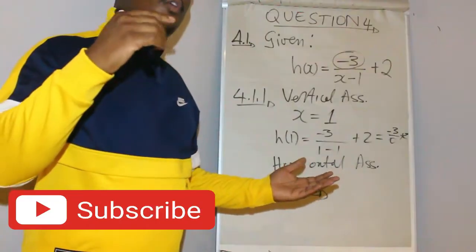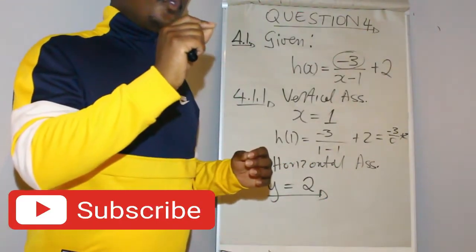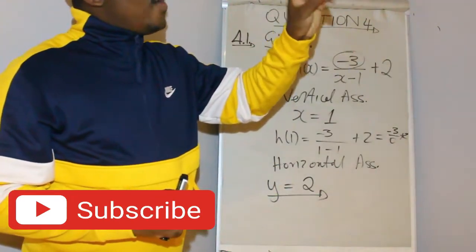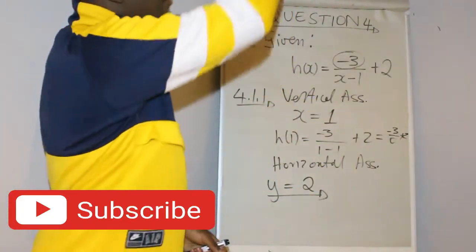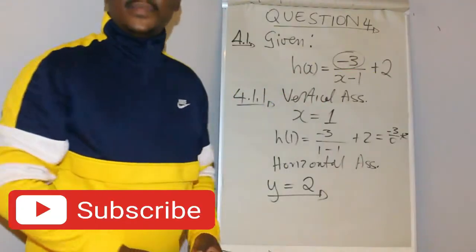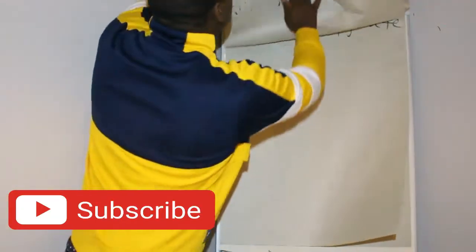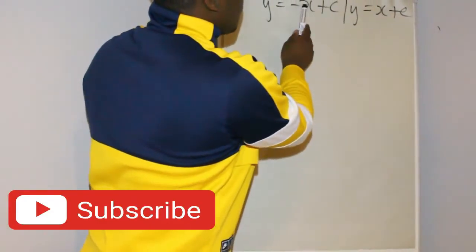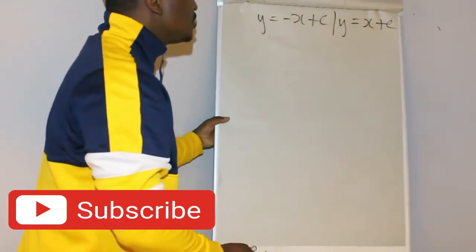That line does cut your function. But what you also need to know is that it passes through the point where your asymptotes meet. Because you have a vertical asymptote and a horizontal asymptote, this line of symmetry, which is this line, because in this case the graph is negative, which means we are going to calculate the line of symmetry using this equation here.